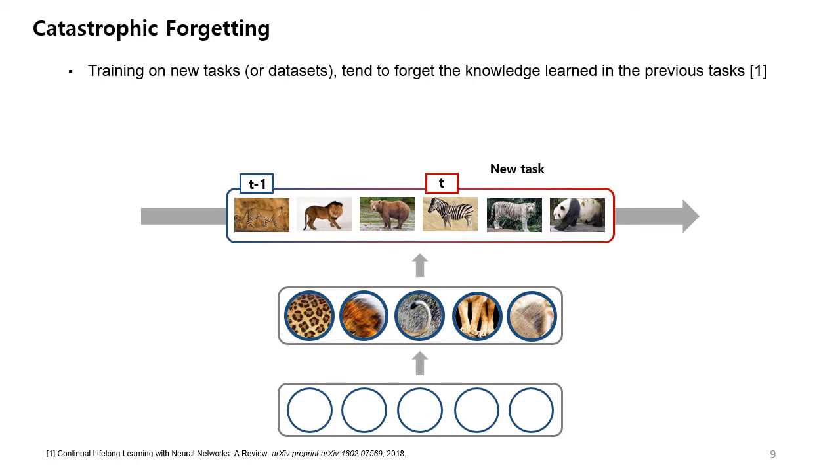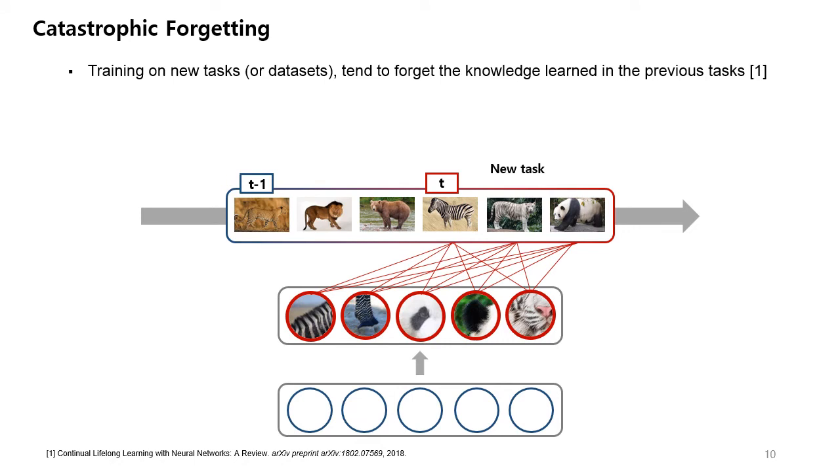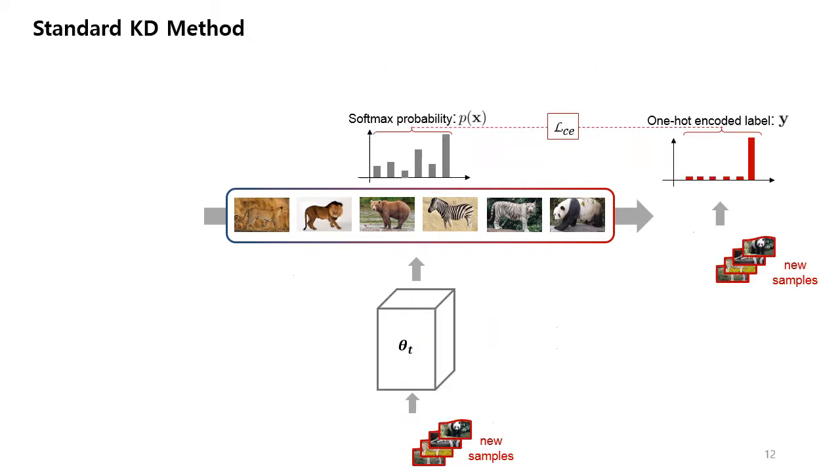More specifically, when a new task comes in, we should learn new knowledge about this new task. However, at this time, this learning of new knowledge can make the network forget the previously learned knowledge, which can drastically drop the overall accuracy over all the classes.